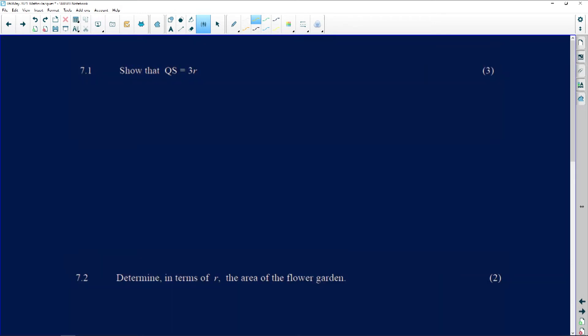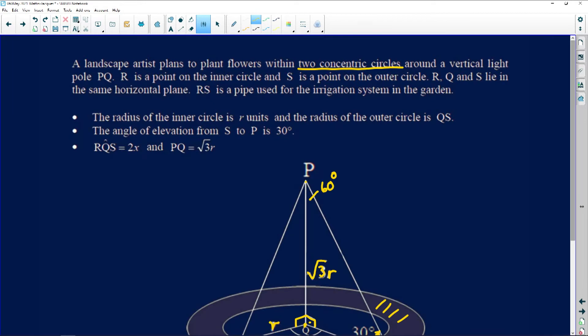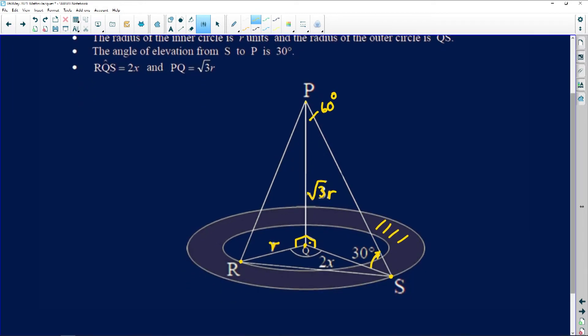They say show that QS is equal to 3R. Now folks, let's go back and let's see where QS is. If I look at my diagram, QS is this radius here at the bottom, the radius of the bigger circle. That belongs to a right-angled triangle PQS. So let's go back. That's going to be quick. There's no fancy stuff that they want us to do there.